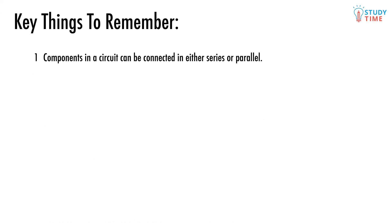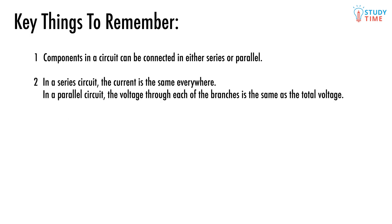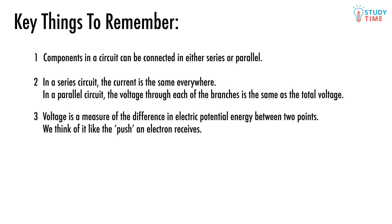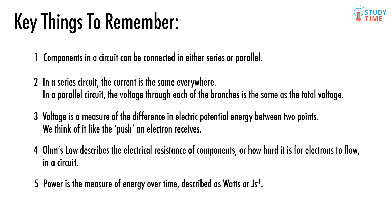Remember components in a circuit can be connected in either series or parallel. In a series circuit the current is the same everywhere. In a parallel circuit the voltage through each of the branches is the same as the total voltage. Voltage is a measure of the difference in electric potential energy between two points. We think of it like the push an electron receives. Ohm's law describes the electrical resistance of components or how hard it is for electrons to flow in a circuit. Power is the measure of energy over time described in watts or joules per second.